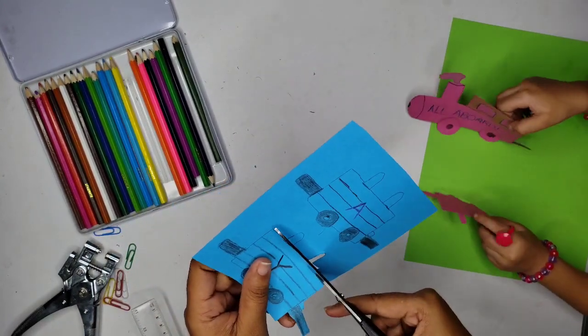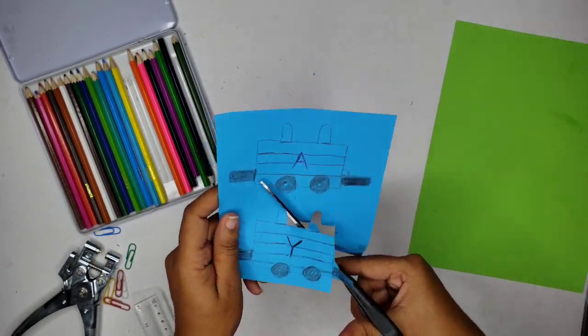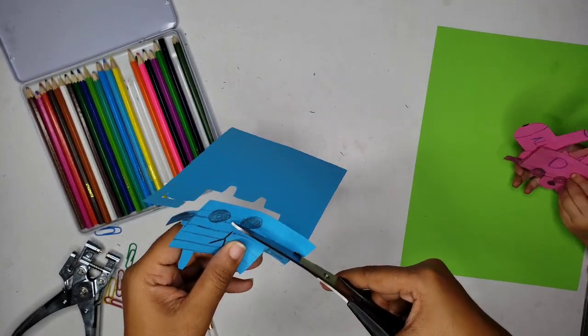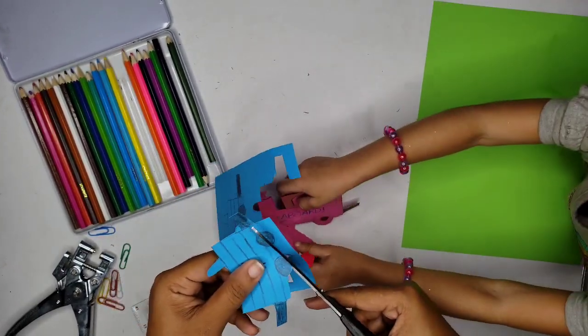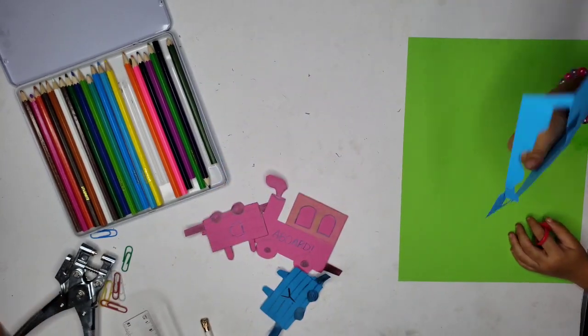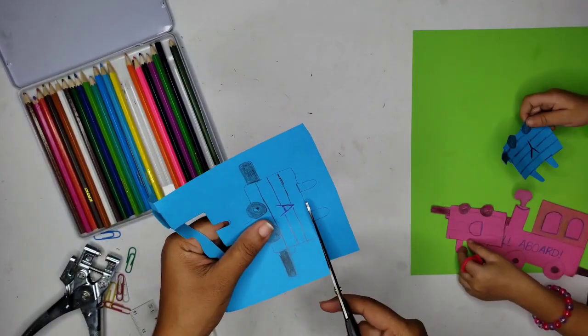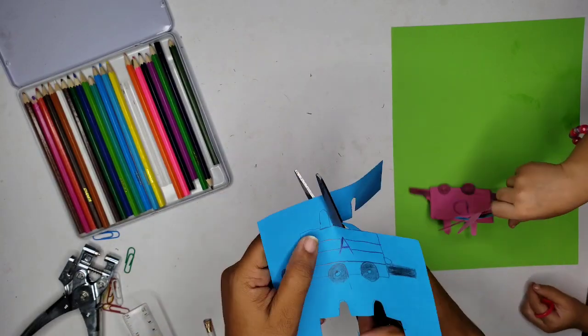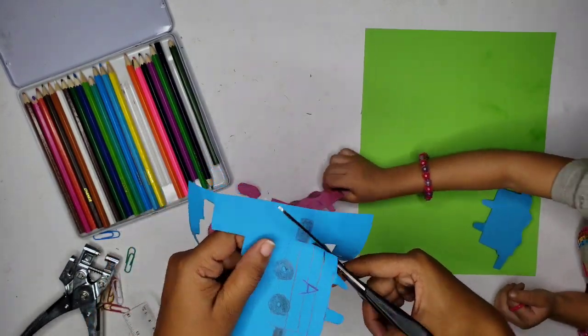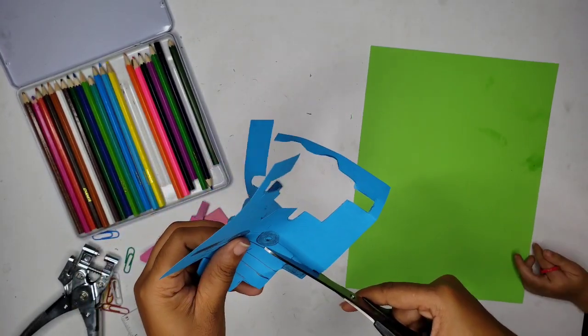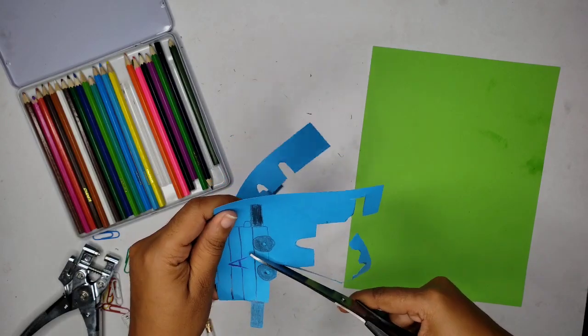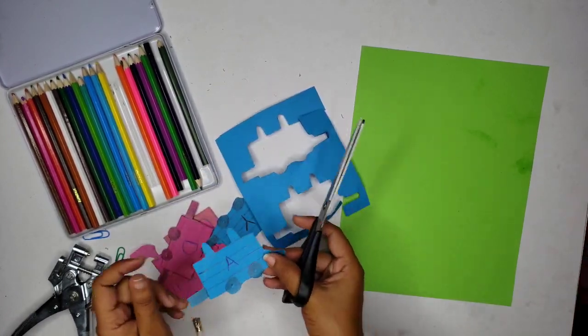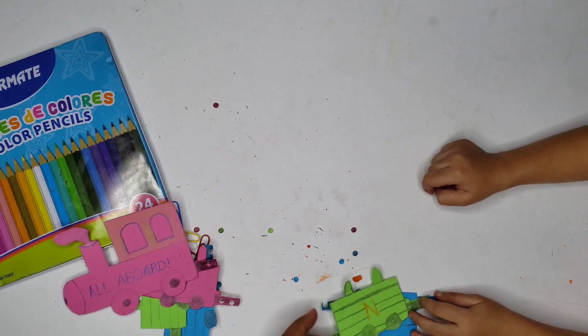So we're going to cut out our other carriages. I don't want to make the video too long, so after I'm finished cutting these out, I'm going to go ahead and do the same on the green paper but off camera. And then I'm going to come back and show you how to punch the holes and how to join the carriages together.